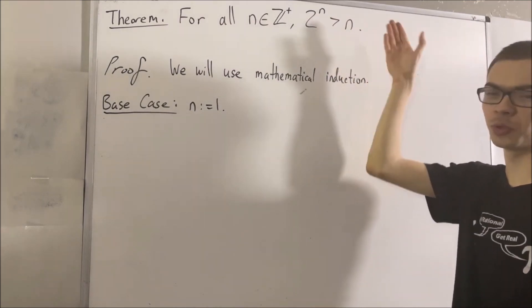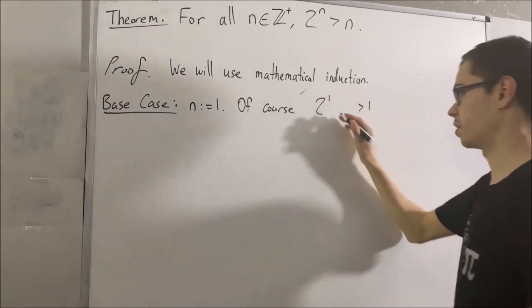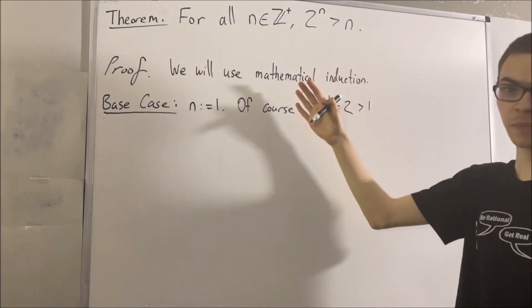Okay, but we already know that 2 to the 1 is greater than 1 because 2 to the 1 is equal to 2 and 2 is greater than 1. So this completes the base case.